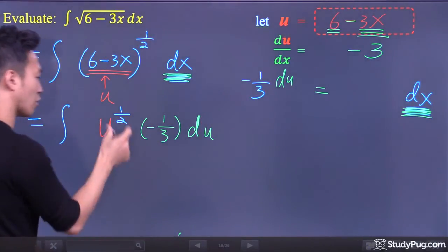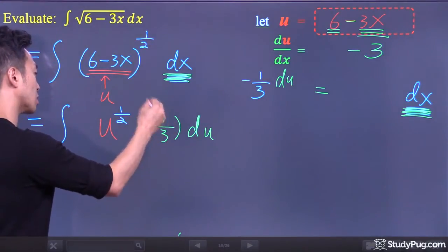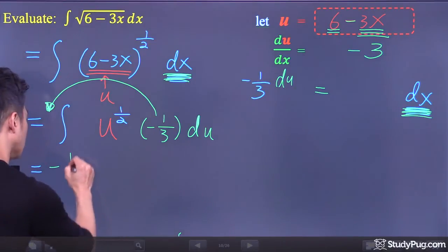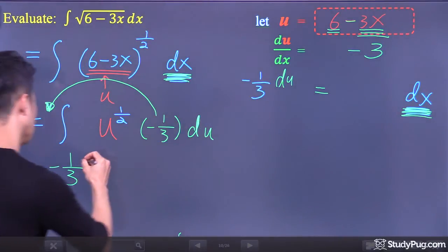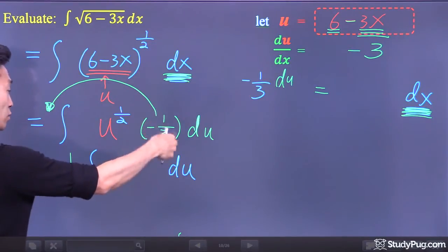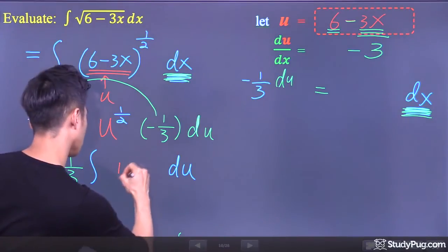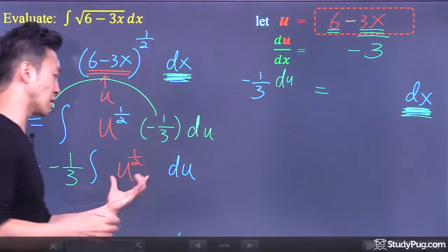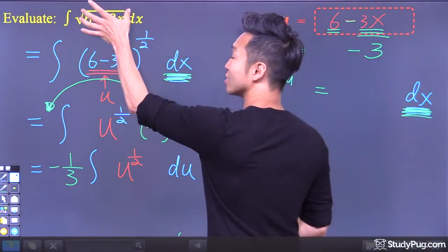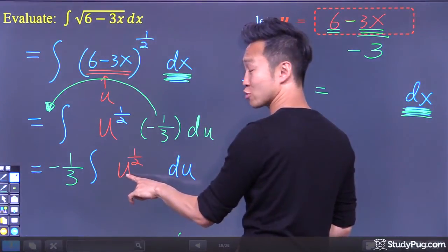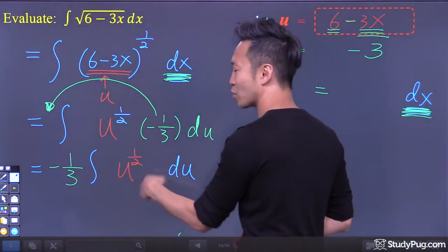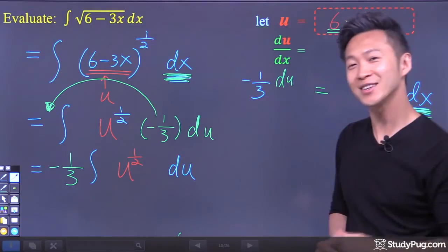When taking the integral of a function multiplied by a constant, we can always take the constant outside of the integral. So after taking negative 1 over 3 outside, we just have u to the power of 1 over 2 remaining inside the integral. And that's the whole point of converting a radical expression to exponential form — because we are just so much more used to finding the antiderivative of a function in exponential form.